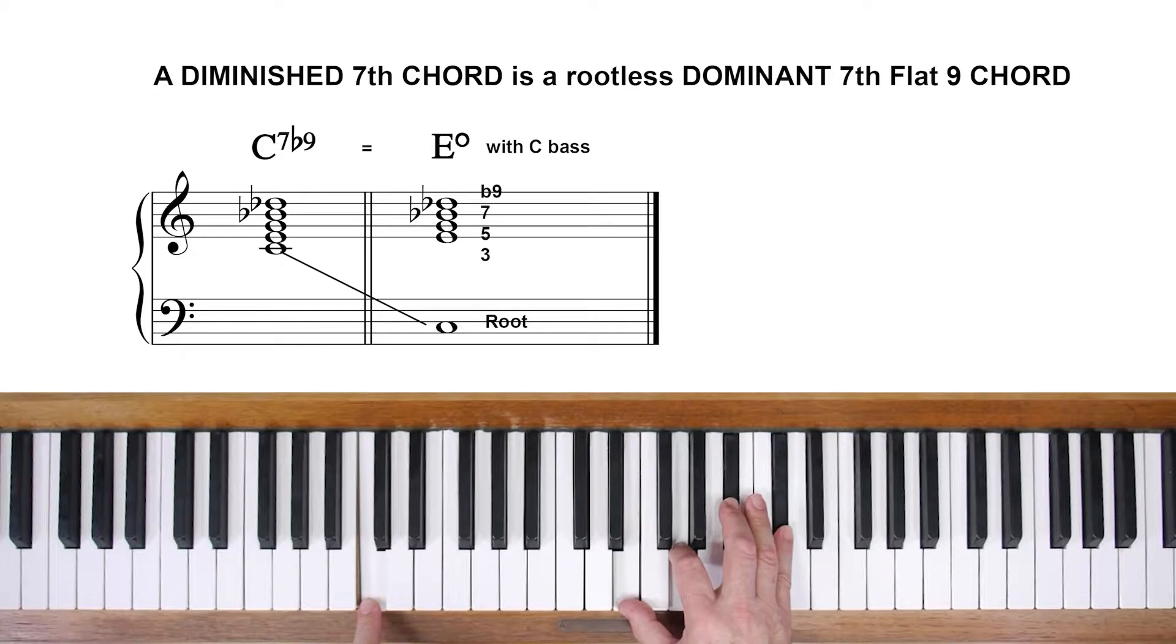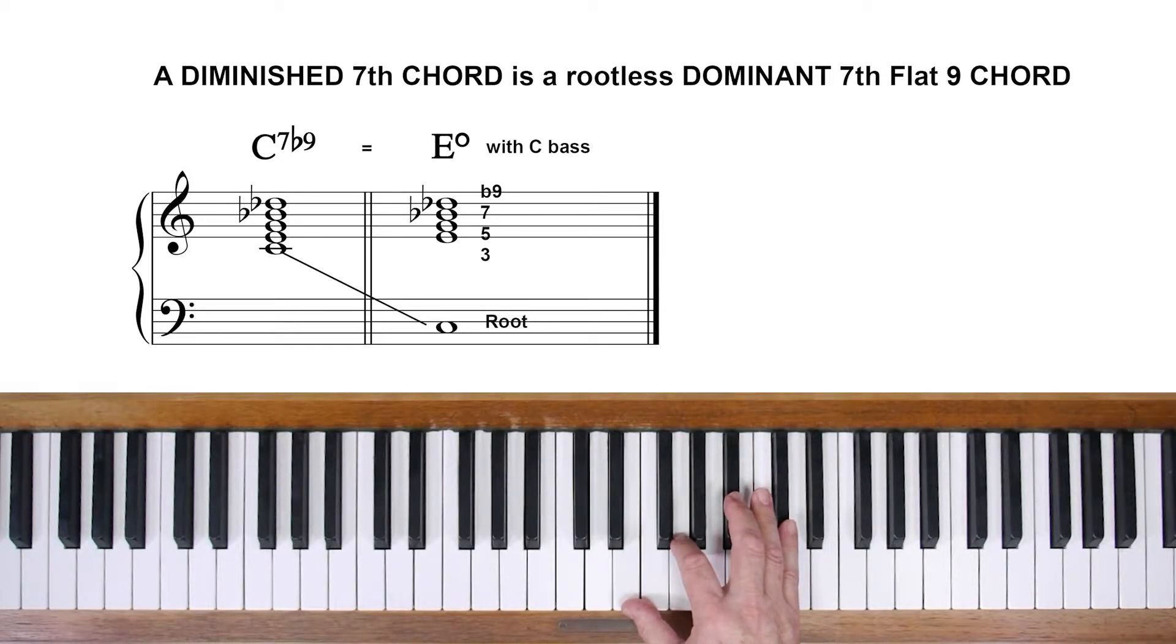What you're left with in the right hand is a 3-5-7-9 shape, in other words, a rootless shape. And because we're dealing with the flat nine and not an ordinary nine, this is actually the same as E diminished seventh. So when you improvise over a flat nine chord, you can play a diminished arpeggio or scale based on the third of the chord, like our E diminished over C.